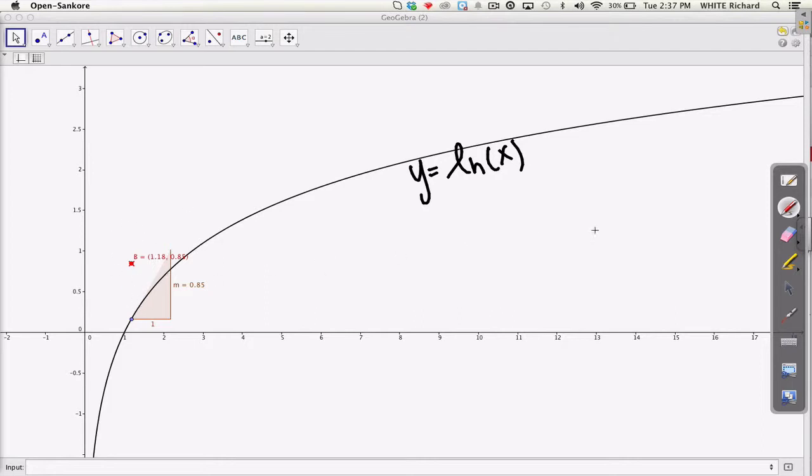So again, similar to the exponential derivatives, we have a point that's on the curve, and you can see here that I have the slope at that point. It's rise over run, so 0.58 divided by 1, which is just 0.58. So here is the slope, and now I'm graphing the slope as the y value, keeping the same x value. See the x value is the same, 1.18, and the slope is 0.58.